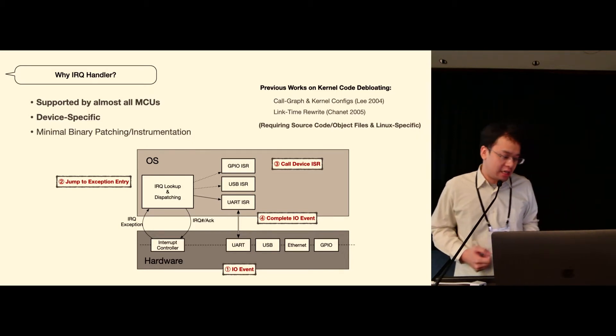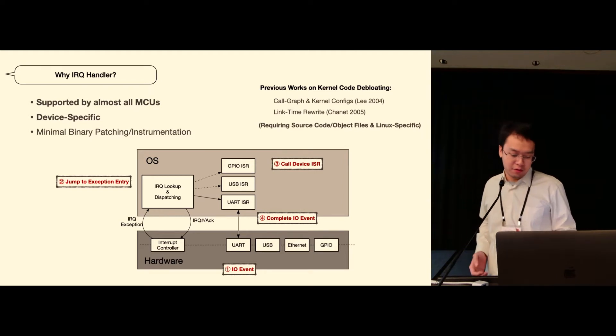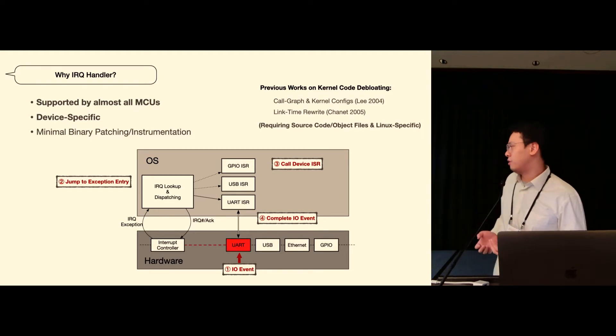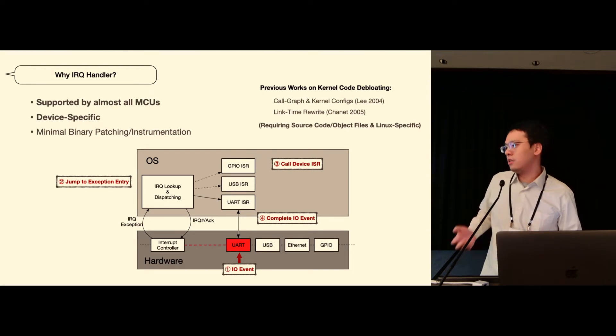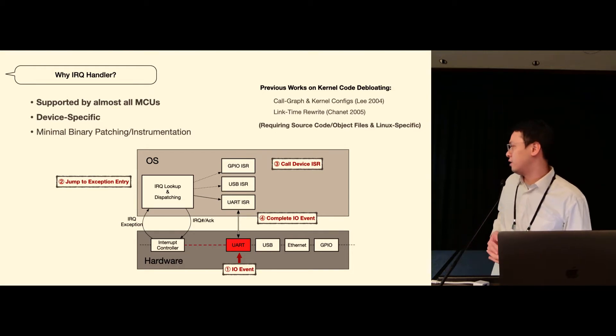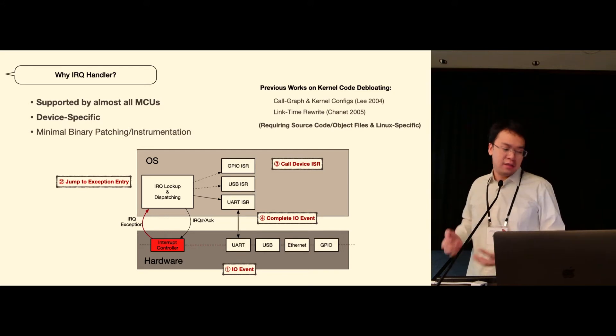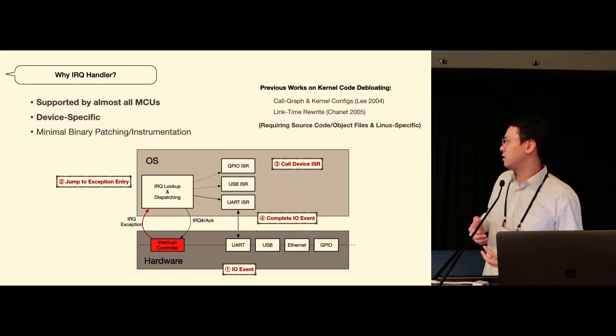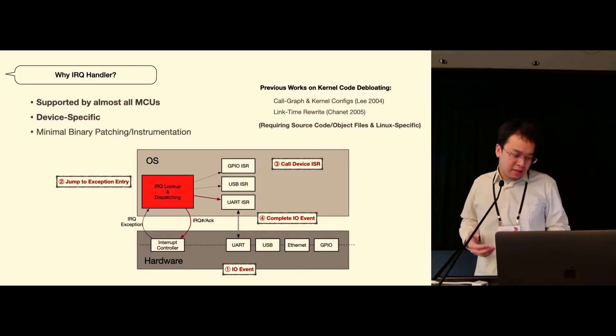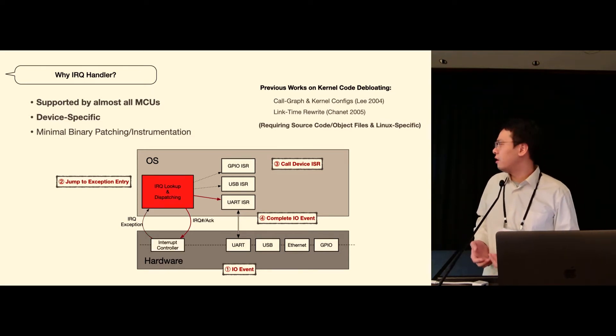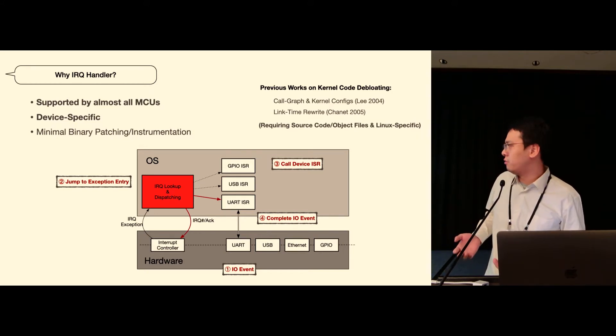Let's take a look at this diagram for a very quick example. Assuming that I'm sending a few keystrokes through the serial port, it's going to create an IO event in the serial device. The signal is going to propagate to the interrupt controller which will in turn raise an IRQ exception in the CPU.